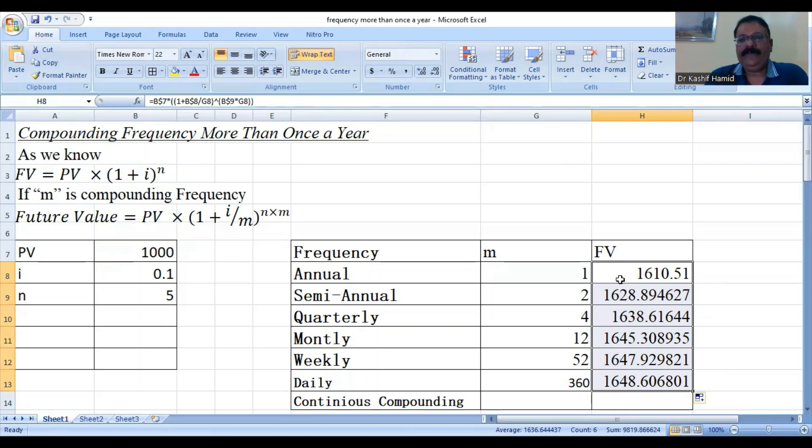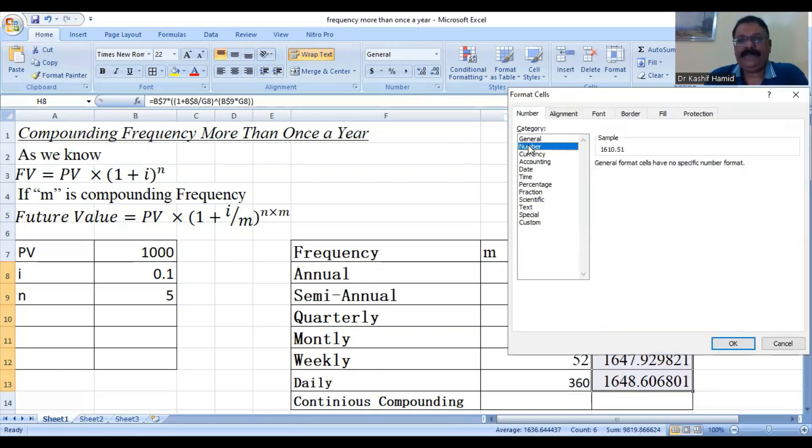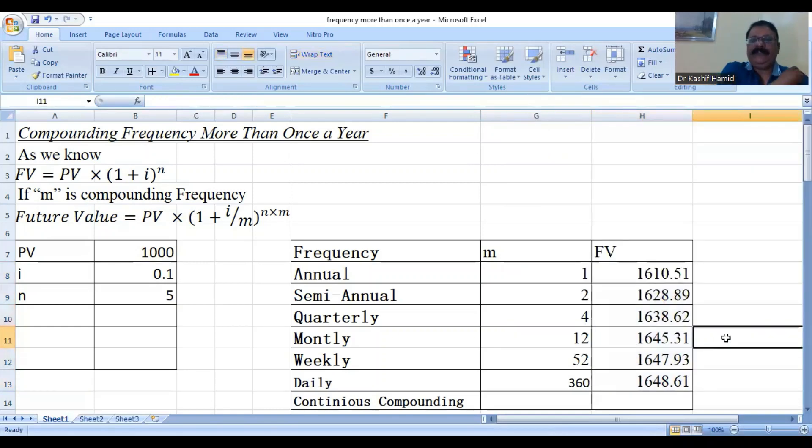So, the computational value will be changed as the compounding frequency will change. We are watching this, that when we used annual frequency, then we have 1610.51